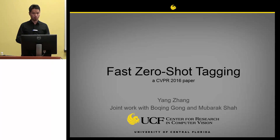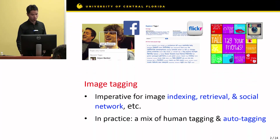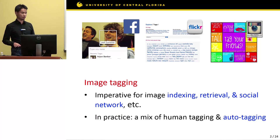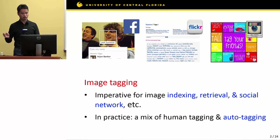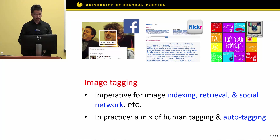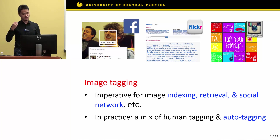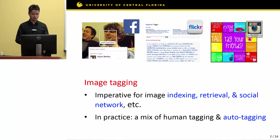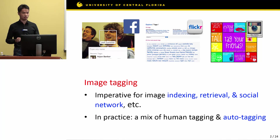This paper addresses the problem of how to assign a query image with tags that have not been seen during the training stage. Let's first review the problem of image tagging. Image tagging has remained an important task in computer vision for a long time. It is a task aimed to assign a query image with multiple tags at the same time. Assigning an unannotated image with multiple tags is meaningful because it helps people to index and retrieve images on both social networks and other personal picture collections. In practice, image tagging is often done with a mixture of human tagging and automatic tagging.